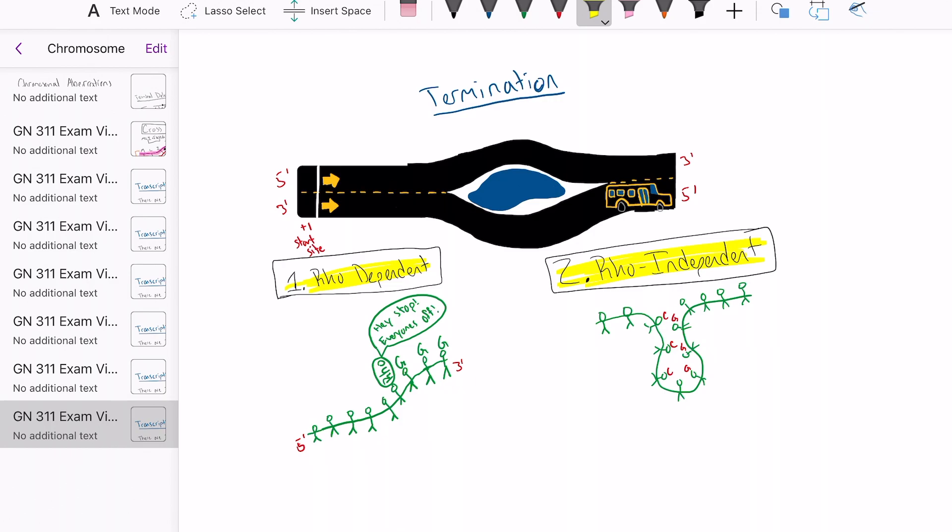Rho-dependent is when the RNA polymerase hits the transcription stop point and allows for the child named rho, right here, or in reality, the rho factor to catch up and tell the bus to stop. So here's rho telling the bus, hey stop, everyone's off.